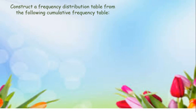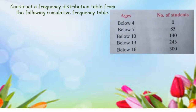In this question, we are going to form a frequency distribution table from a cumulative frequency table. The cumulative distribution table and cumulative frequencies are shown here. The first thing to do is find the class size. Just find the difference between these numbers: 7 minus 4 is 3; 10 minus 7 is 3; 13 minus 10 is 3; 16 minus 13 is 3. So the class length is 3.